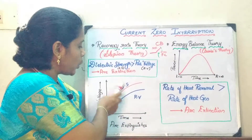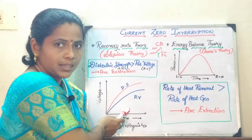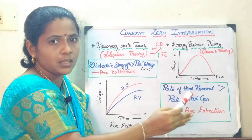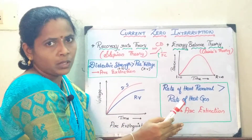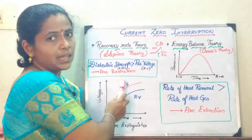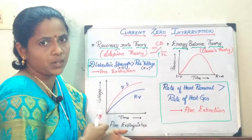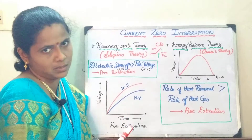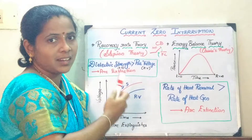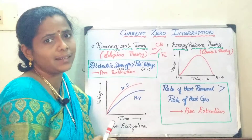Suppose the situation is vice versa — if the restriking voltage is going to be more than your dielectric strength, then the arc will restrike again, and it will take one more half cycle to quench the arc when it reaches current zero. So to summarize: if the dielectric strength is greater than the restriking voltage, the arc will get extinguished; if the restriking voltage is greater than the dielectric strength, the arc will persist. The rate at which the dielectric strength is getting recovered with respect to the restriking voltage is called the recovery rate theory.